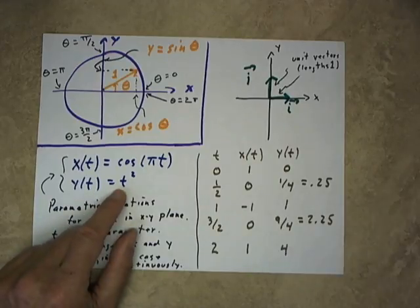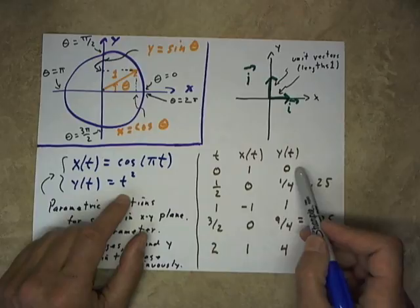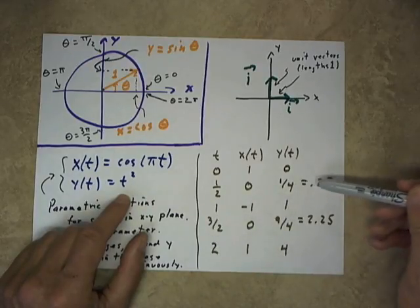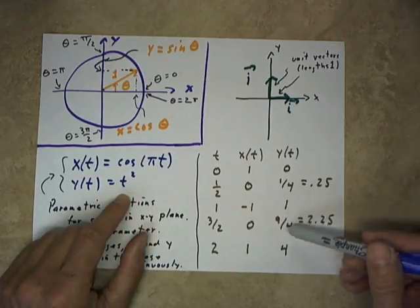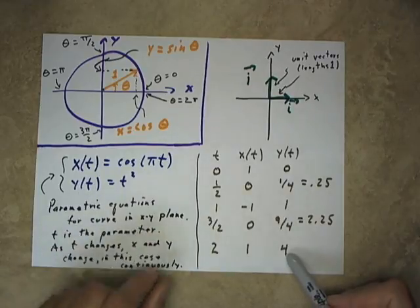The y function is, of course, a lot simpler. We don't need a picture. We can just square the numbers 0, 1 half, 1, 3 halves, and 2, obtaining 0, 1 fourth or 0.25, 1, 9 fourths, which is 2.25, and 4.